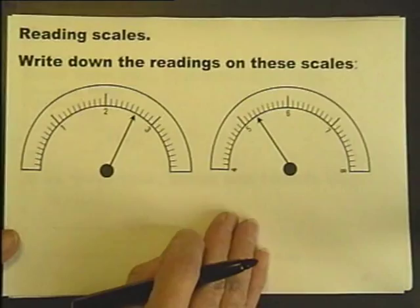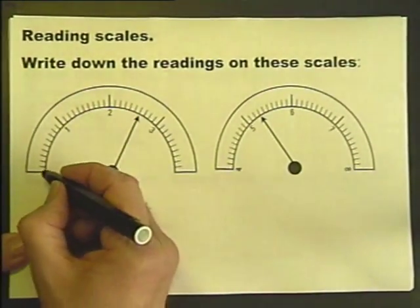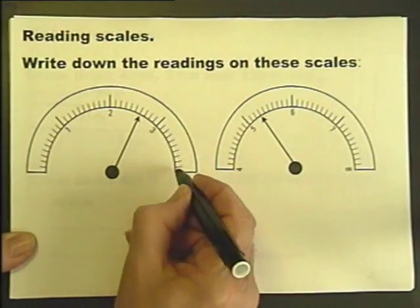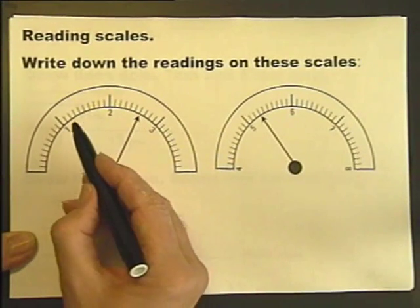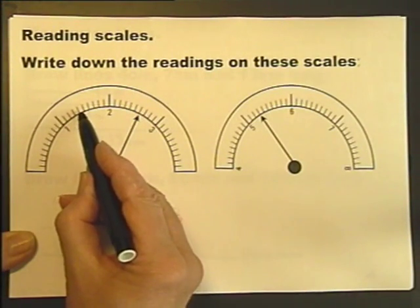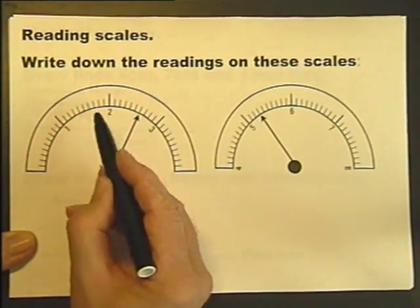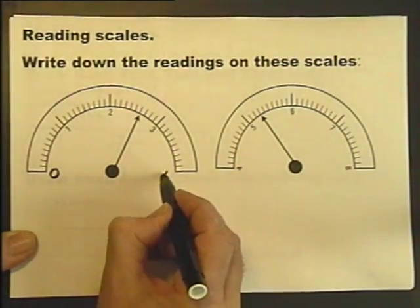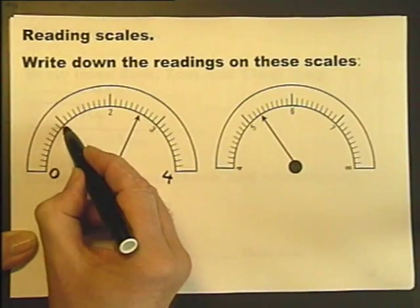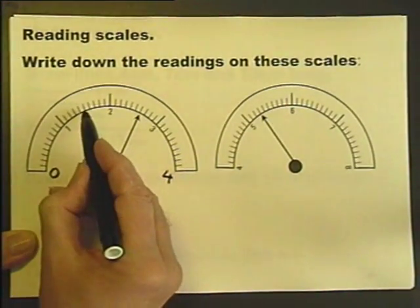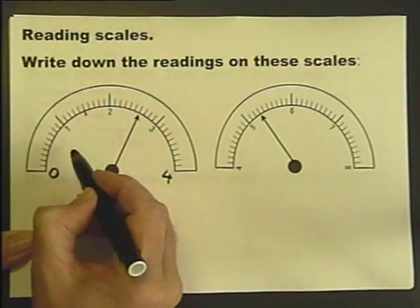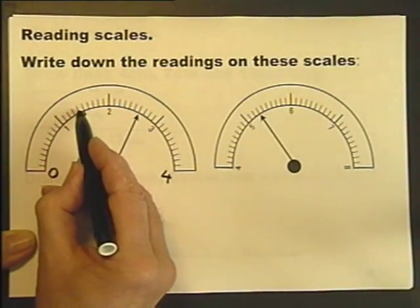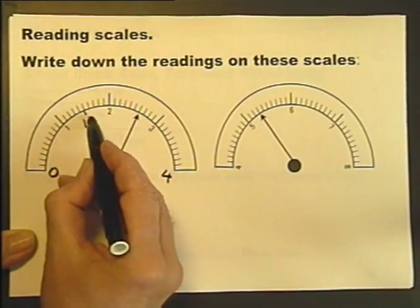Moving on to reading scales. When you see a dial with a scale on it, the first thing to do is to make sure you're happy with how the scale is going up. So this is actually going 0, then 1, 2, 3, 4. So what's happening in between? Well that's halfway along there. 1, 2, 3, 4, 5, that's 1.5 there.